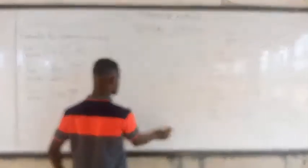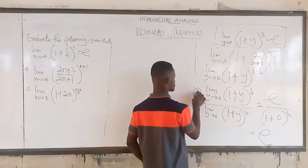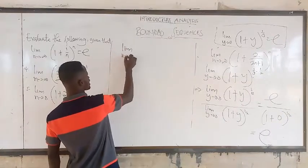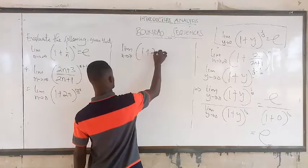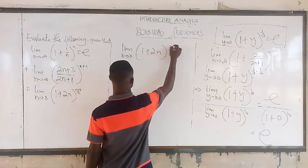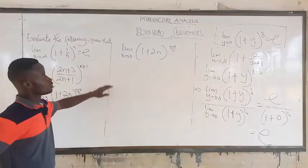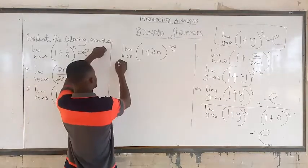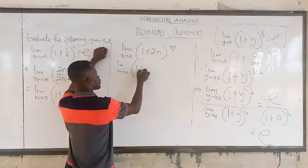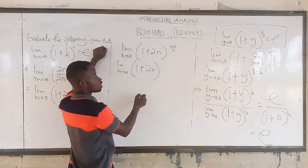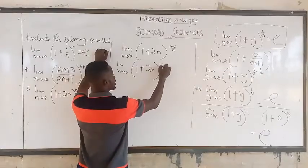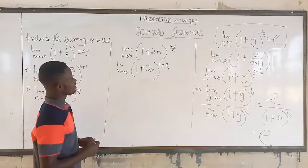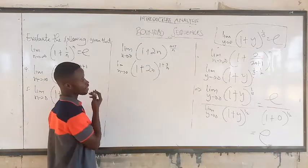After solving this, you should be able to solve this practice question on your own. We have the limit as n approaches 0 of (1 + 2n)^((n+3)/n). Watch — you should be able to know what to do. We can apply the same method in the same way.